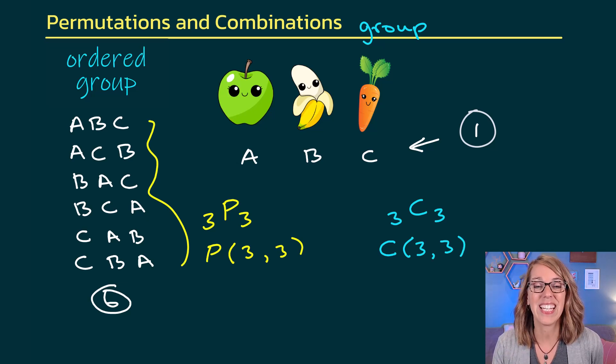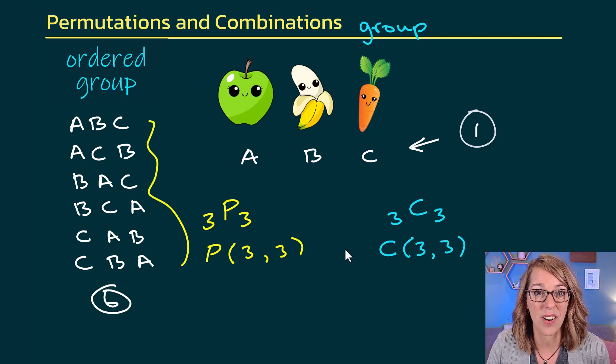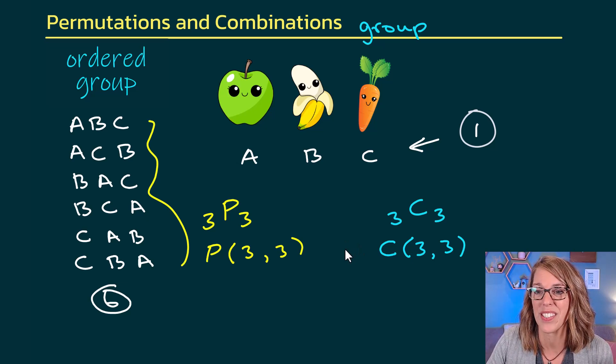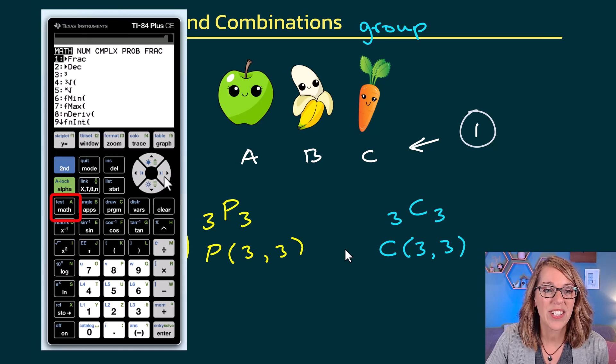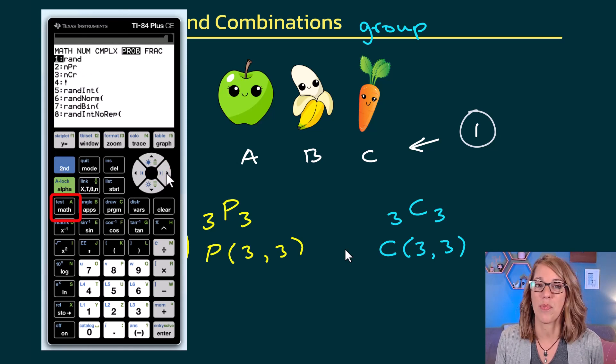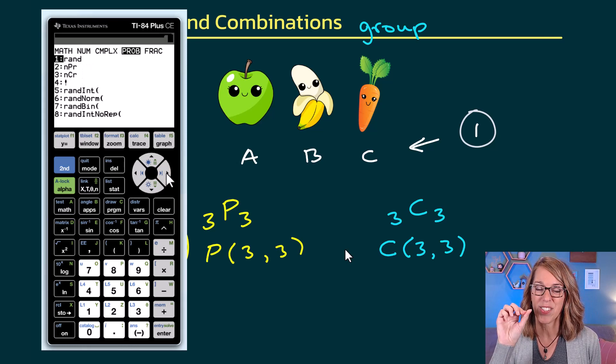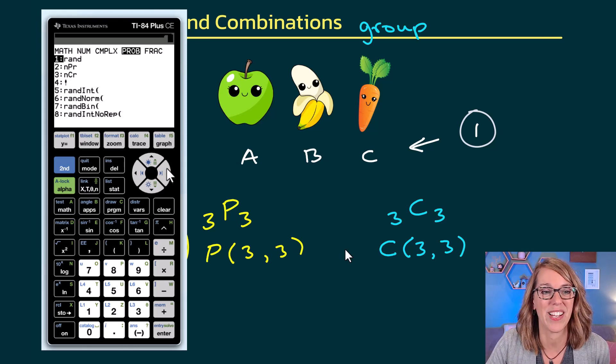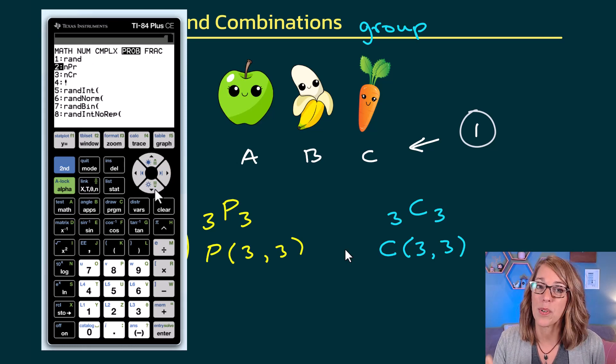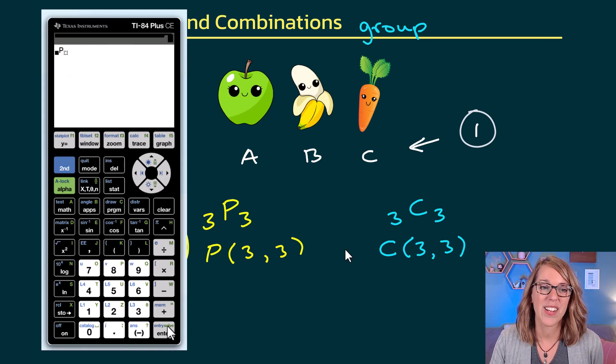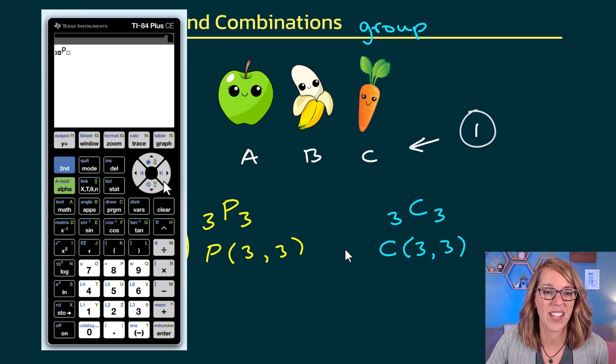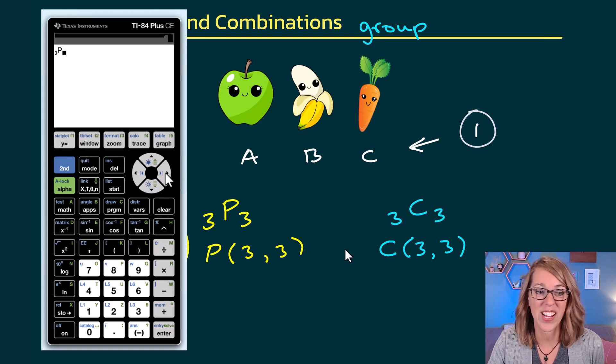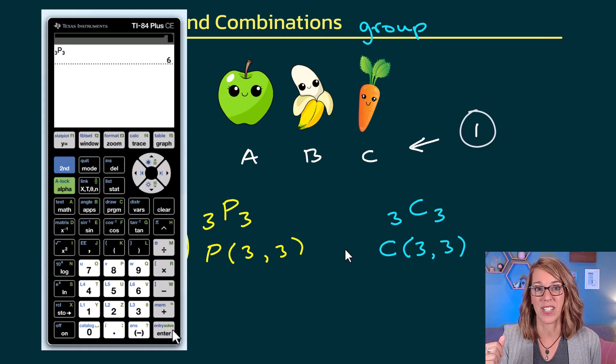Now I can put either of these easily into my TI-84 to come up with these values. Let's do the permutation first. I'm going to go to my math menu, and I'm going to arrow over to probability. You'll notice that there's my permutation and combination listed. We're going to do the permutation first. I'm going to hit enter, and it wants to know what the first number is. So I've got 3 items, and I am arranging 3 of those items in my group. I hit enter, and there's my number 6.